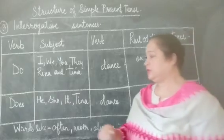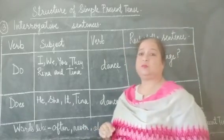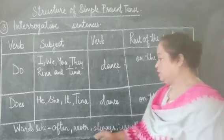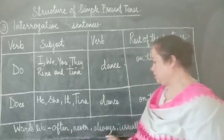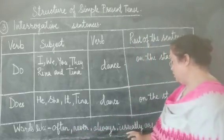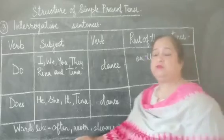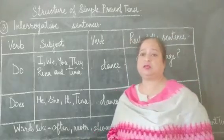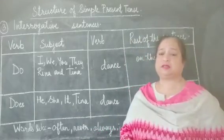There are some words which are generally used with the simple present tense: often, never, always, and usually. These are frequency words which are always used in simple present tense sentences.